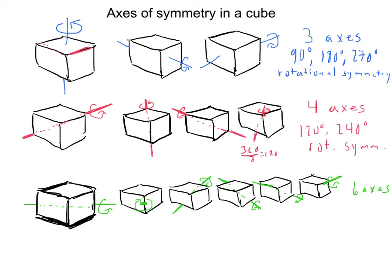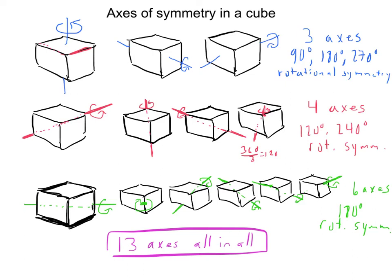So all in all, there are 13 axes of symmetry in a cube, and we showed that there are three of them up here as such. Four like this, and six like this, with those respective angles.